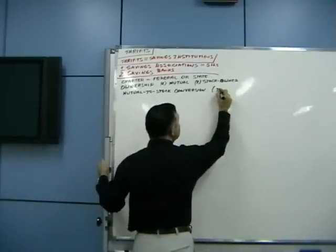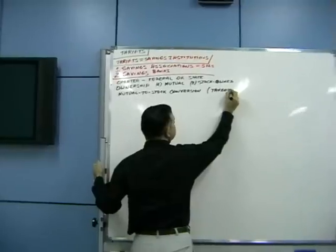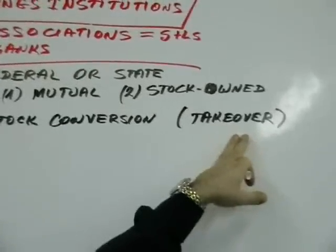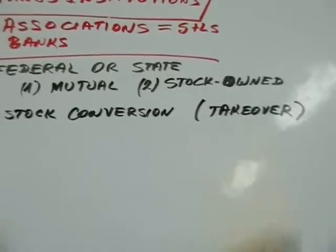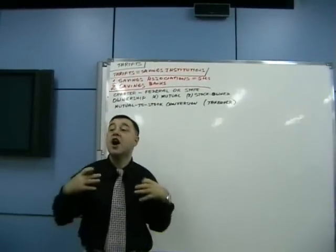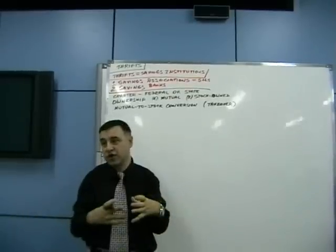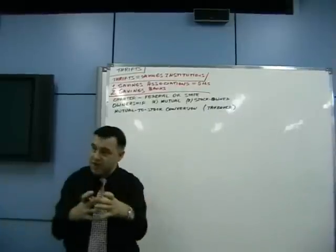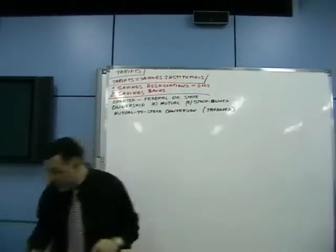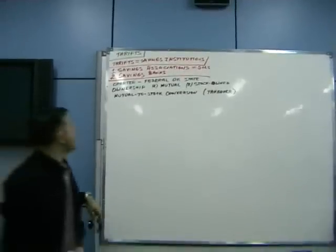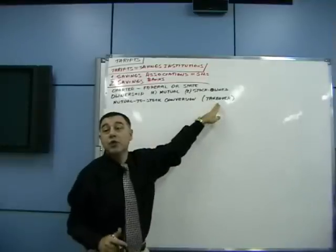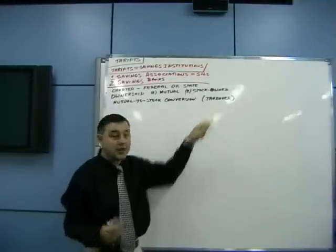When there was a trend in mergers and acquisitions, you need stock-owned institutions, and mutual-to-stock conversion allows this to happen. This is usually done in so-called takeovers — a process where one company acquires another company or acquires a controlling package. A takeover is when one company acquires another, as opposed to a merger, where two entities merge together. Stock-owned institutions are also susceptible to what is known as hostile takeover.